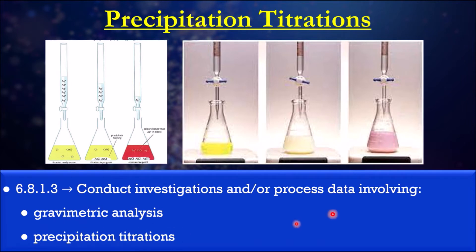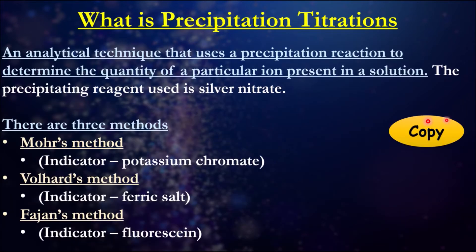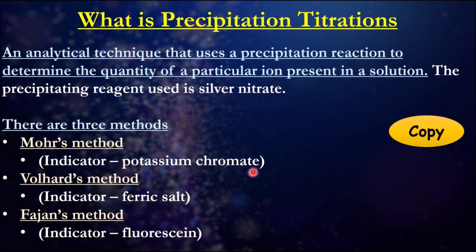Let's look at precipitation titrations and the three types of methods. It's a technique used to determine the quantity of particular ions of concern. The precipitating agent we're going to use is silver nitrate. There are three methods: the Mohr's method, where we use the indicator potassium chromate; the Volhard's method, which uses an iron salt solution; and the Fajan's method, where we use fluorescein. Let's go through each of them and then look at some calculations.